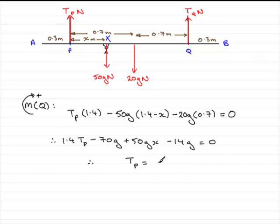So what you've got is 84G. That's if you group the 70 and the 14 together. Minus 50GX, all divided by the 1.4.